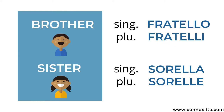For brothers and sisters we use different terms. The Italian word for brother is fratello and the one for sister is sorella. In the plural they become fratelli and sorelle.